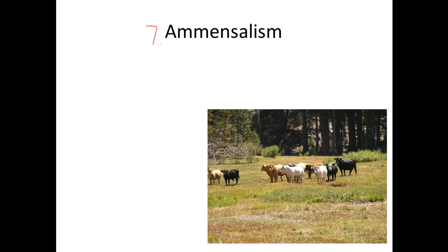The seventh relationship is amensalism. In amensalism, for one organism it doesn't matter, but for the other organism it is harmful. For example, cows walking on grass — it doesn't matter to the cows, but the grass gets trampled and killed by their hooves. The classic example is when we walk through a grassy area and step on the grass, destroying some of it.